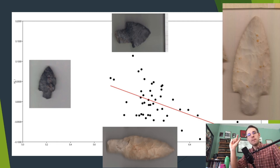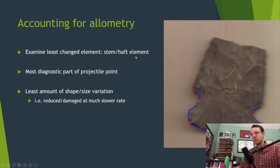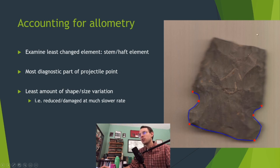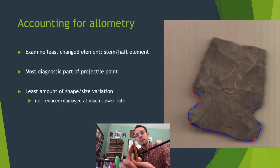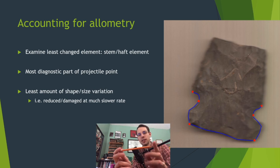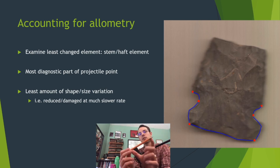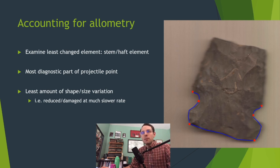So really, what we're seeing is a lot of shape variation in the blade element when we look at the entire point. But if we just look at the haft element, we'll notice that the shape doesn't change as much. That's why we need to account for allometry by focusing on the haft element — ignoring the top part that varies the most, like ignoring the rest of the pencil and just looking at the metal eraser tip morphology. Then we're going to learn more about temporally diagnostic types, because the haft has the least amount of shape and size variation — it's in the haft and won't be reduced as much.